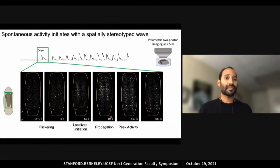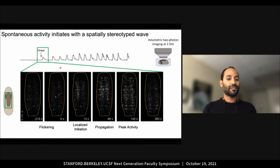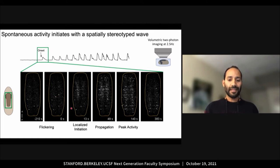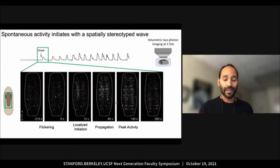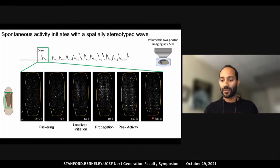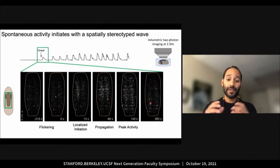We next zoomed in on the first burst of activity using volumetric two-photon imaging. This reveals a characteristic spatial structure. Before onset, there is sporadic flickering-like activity throughout the CNS. Then, activity begins at a localized initiation site and propagates along the anterior-posterior axis. It then reaches peak activity. Remarkably, this wave of activity always initiates at the anterior site and ends at the most posterior site, revealing spatial stereotypy.